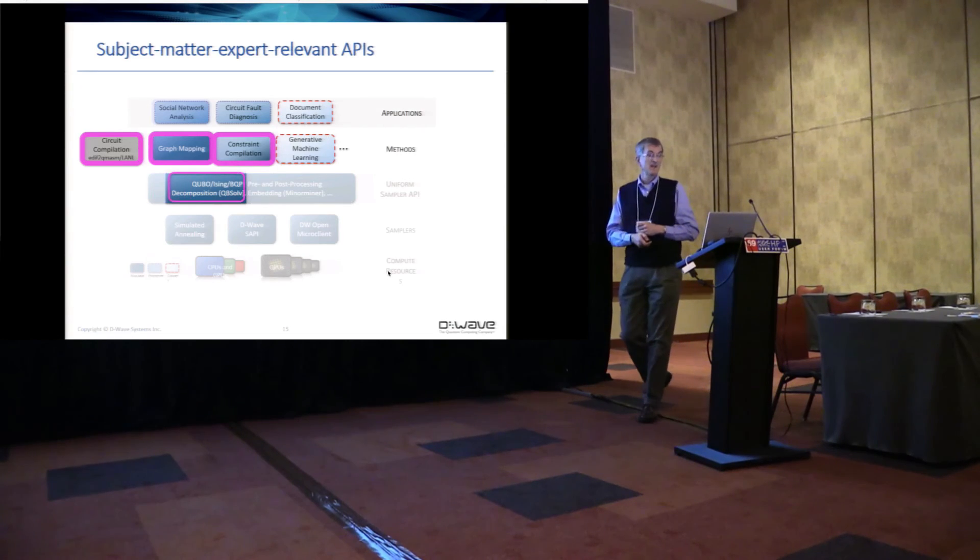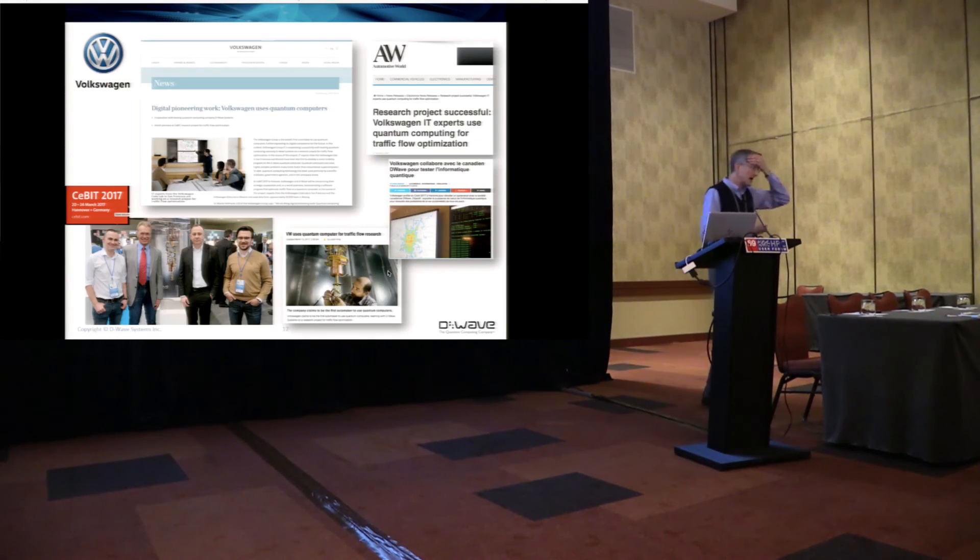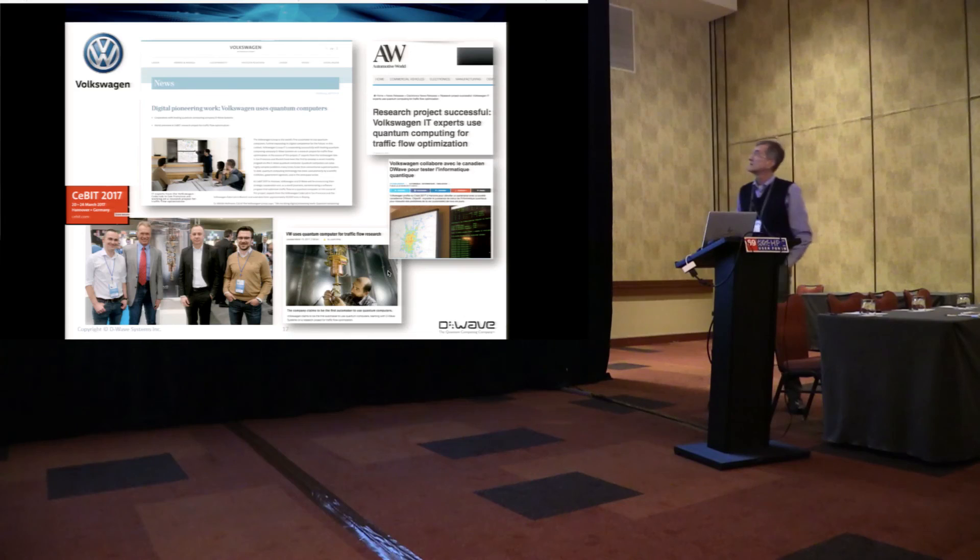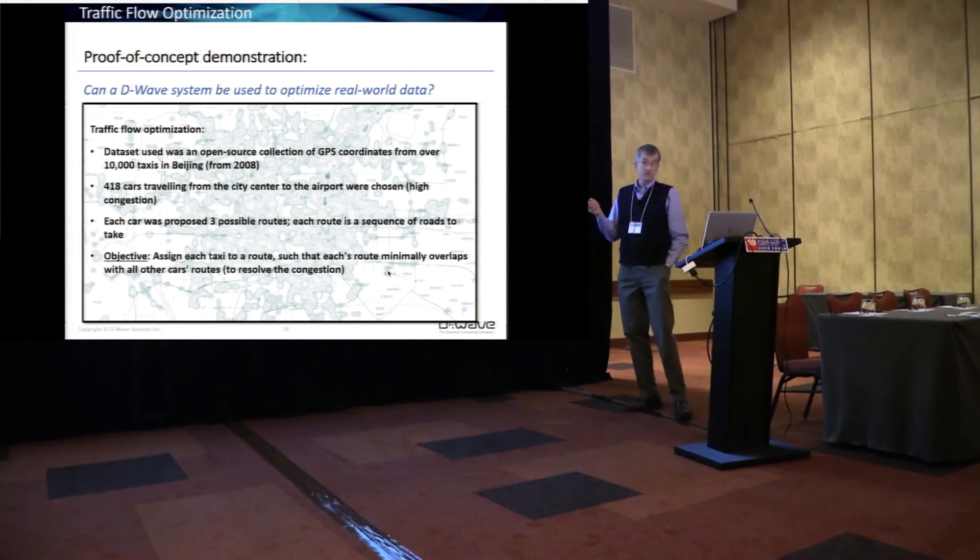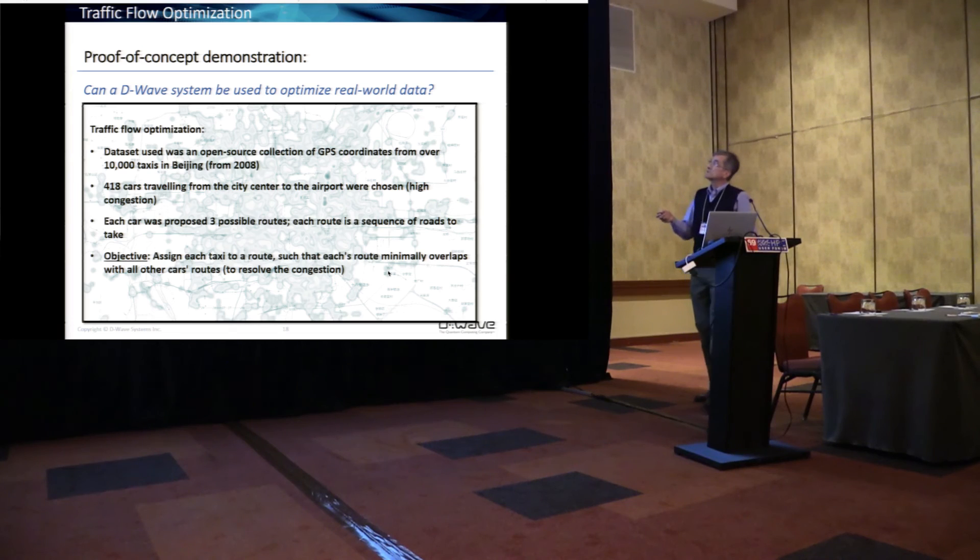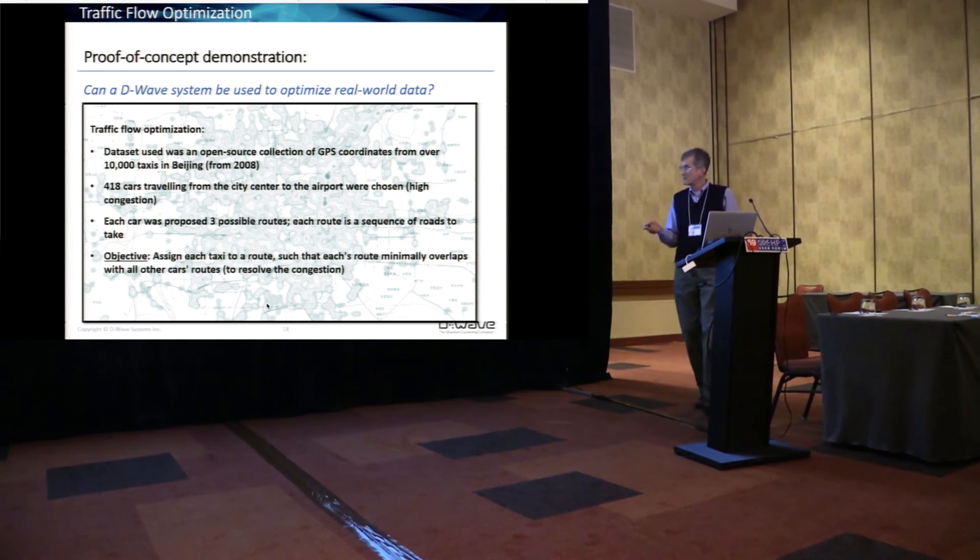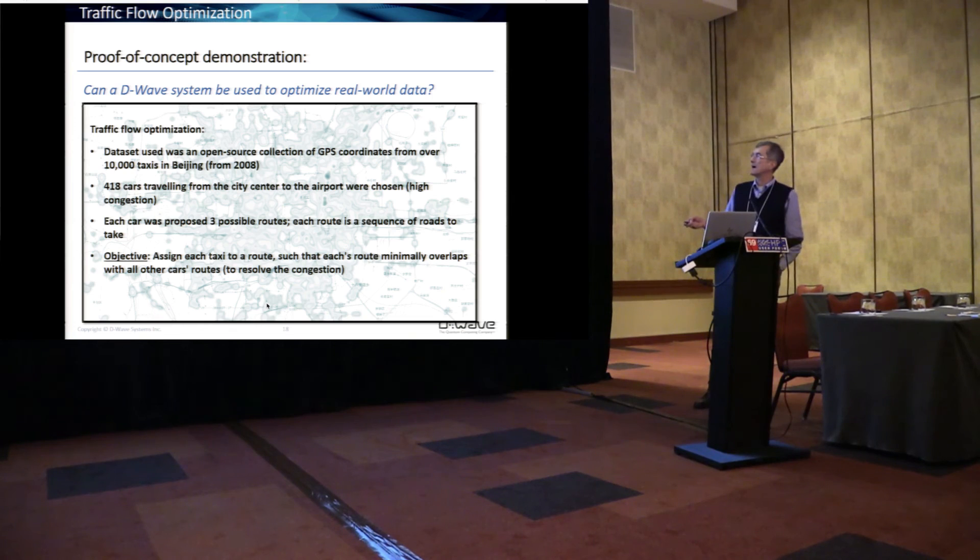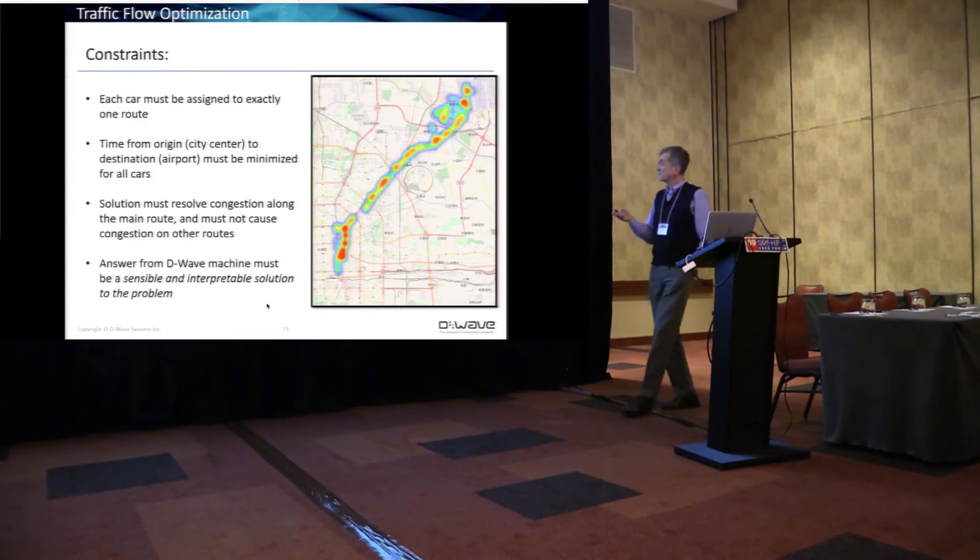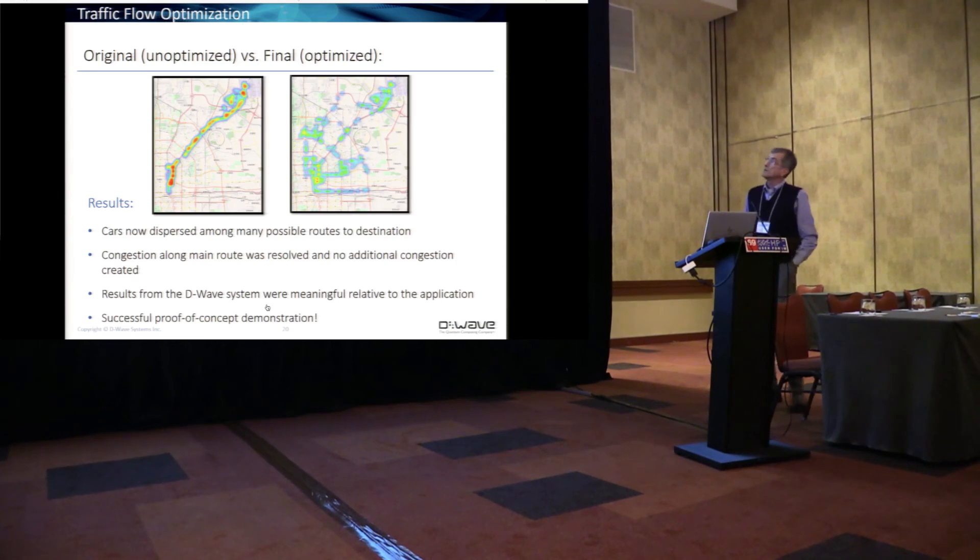And last, I want to call out, I think we should guide ourselves by some early application successes. So, this is VW at last year's CEBIT. They wanted to start with a real world problem. And so, they picked open source data that showed traffic, taxi data from Beijing. And we ultimately picked 418 cars going from the city center to the airport. We wanted to assign each taxi to a route such that each route minimally overlaps with other cars to resolve congestion. Here's the before picture. There's the after picture. You can see congestion was resolved. They viewed this as a major win.